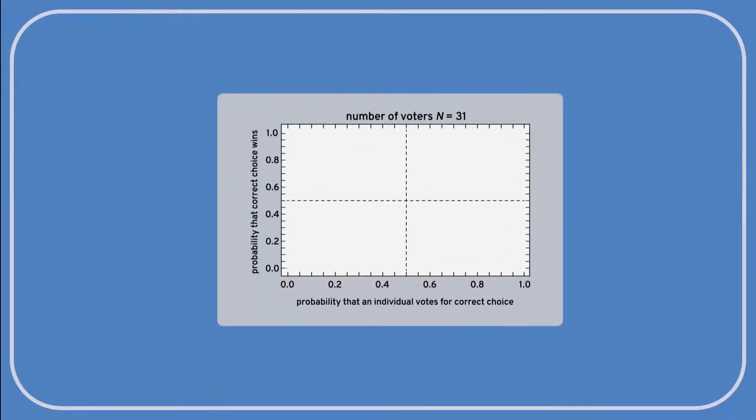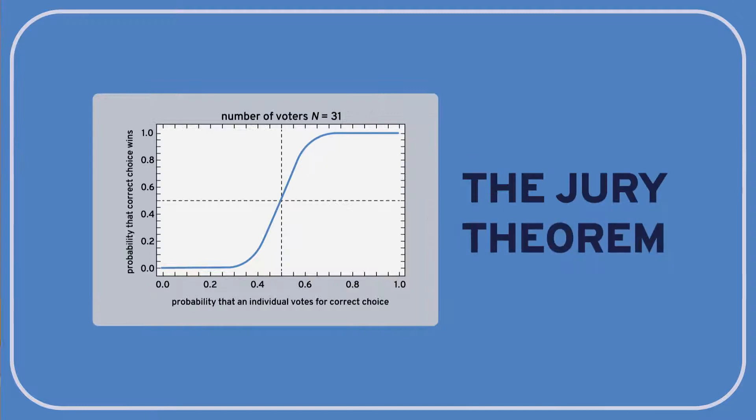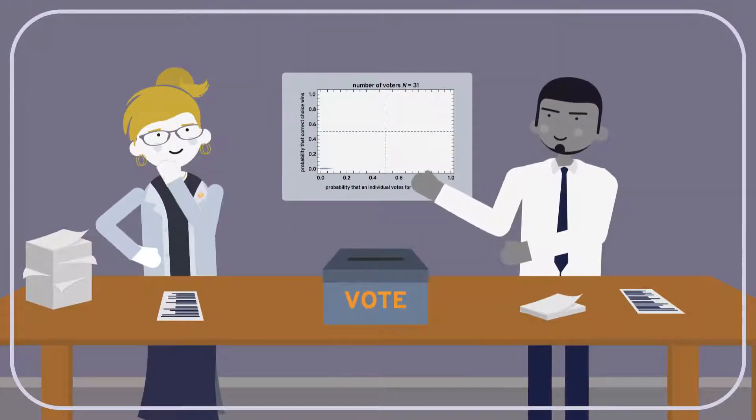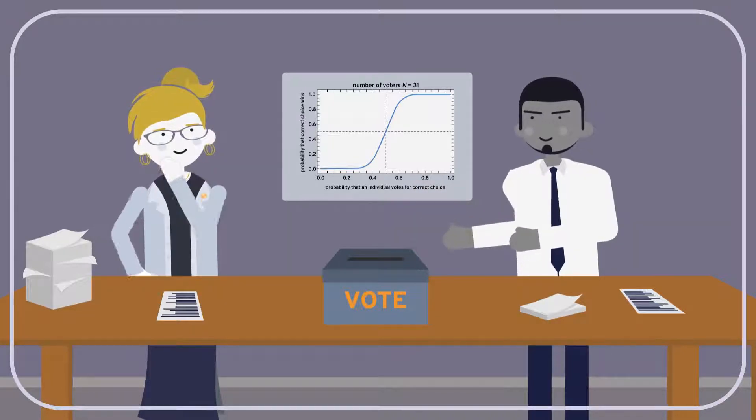But the idea that he's best known for is a mathematical discovery called the jury theorem. Many thinkers have viewed the jury theorem as a vindication of Rousseau's idea that democratic elections are the best way to discern what's best for society.